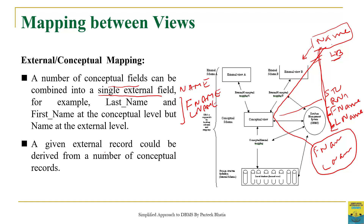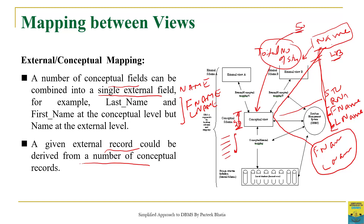Sometimes a given external record could be derived from a number of conceptual records. For example, if we are looking for the total number of students, then this information at the external level will be created by counting all the records at the conceptual level. At the conceptual level we may have a set of 50 records, but these 50 records give a single value — a total count of 50 — at the external level. So this value is derived from a number of conceptual records. This is the importance of External-Conceptual Mapping.